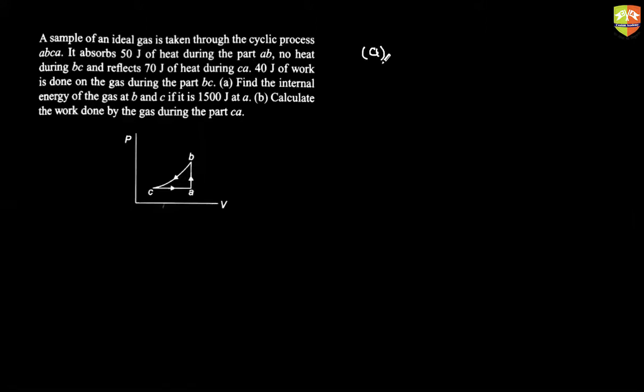We need to find out internal energy of the gas at point B. Let's focus on B right now. So from A to B, I have internal energy at point A to be equal to 1500 Joules. So I can use ΔQ = ΔU + W only for A to B process. So A to B process, what is ΔQ? Let's see A to B process. 50 Joule of heat is absorbed. So ΔQ is plus 50.